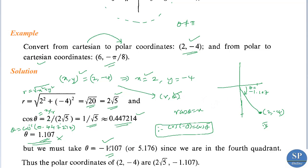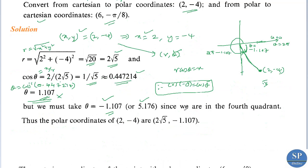So θ equal to −1.107, or equivalently 2π − 1.107 ≈ 5.176, since the line θ = 0 is the same as θ = 2π. The required polar coordinates of (2, −4) are (2√5, −1.107).